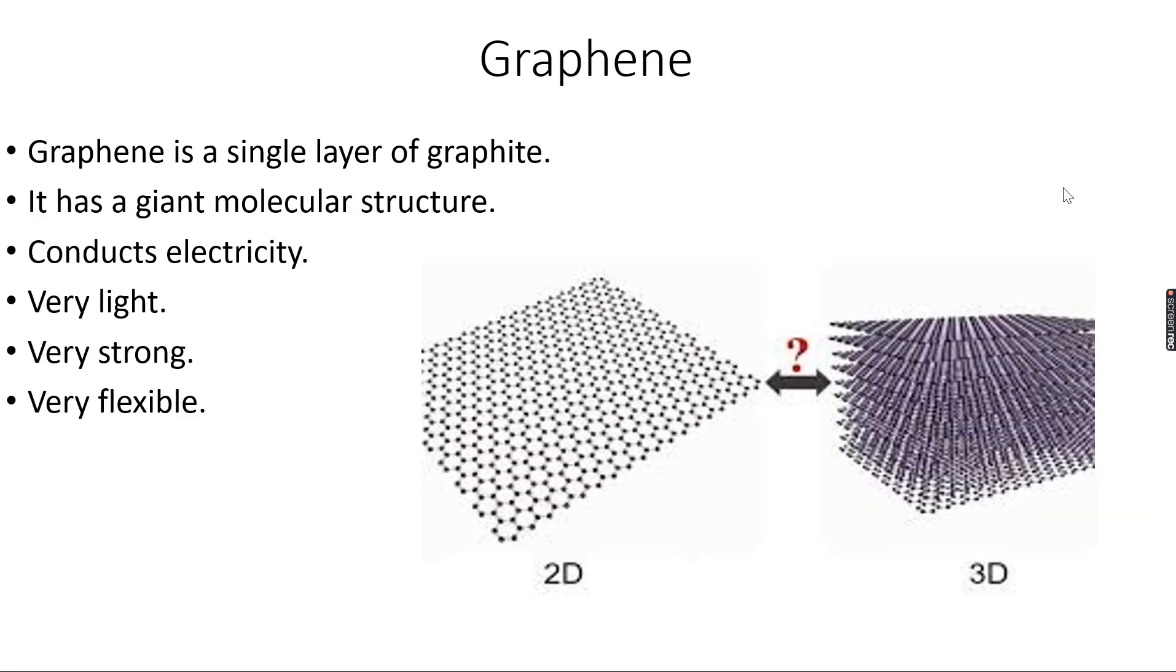This brings us to the last giant molecular structure which is graphene. The structure you see on the right is a structure of graphite, you can see all these layers over here. When you take out a single layer of graphite it's graphene. Actually graphene is very difficult to synthesize and it's a very modern allotrope of carbon because it was discovered only very recently.